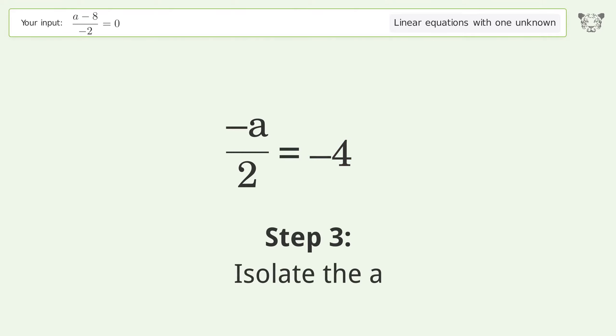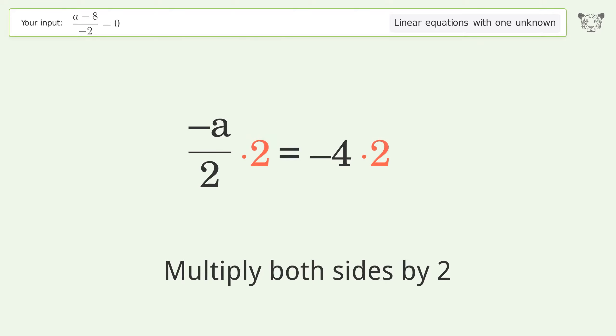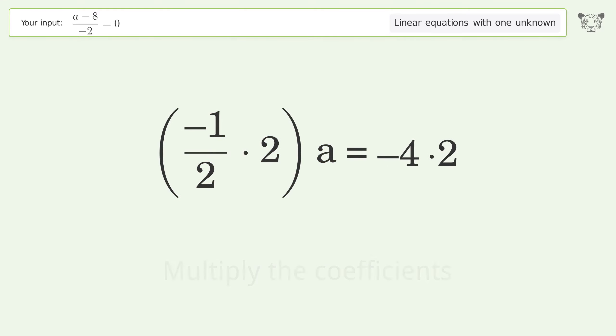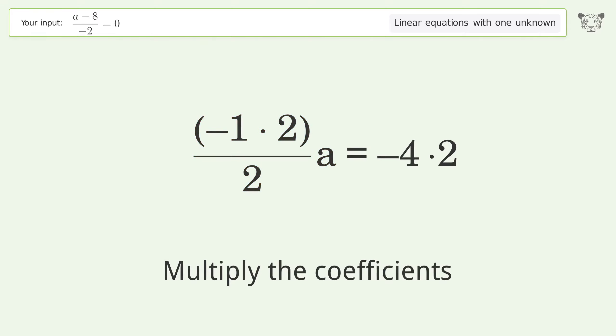Isolate the a. Multiply both sides by 2. Group like terms. Multiply the coefficients. Simplify the arithmetic.